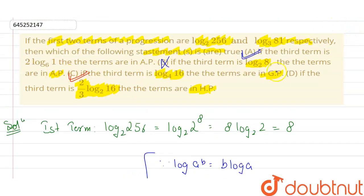Among all the options, option A is correct, option C is correct, and option D is correct, but option B is wrong. These are the answers we are looking for.